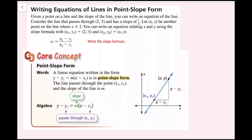You can write an equation relating x and y using the slope formula, with (x1, y1) equal to (2, 3) and (x2, y2) equal to (x, y). So if I plug those points into this equation, I'll get 1/2 equals y minus 3 over x minus 2.